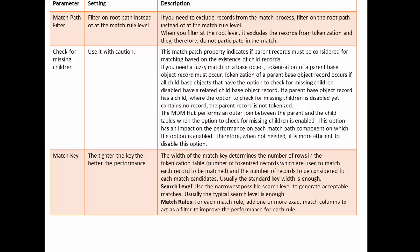Regarding match key: tighter the key, the better the performance. If you use a tighter match key, your performance will definitely get better. It is recommended to add some exact columns in your match rule to give a tighter match key. The width of the match key determines the number of rows in the tokenization table and the number of tokenization records used to match each record. The standard key width is typically enough — do not go for very exhaustive key generation.